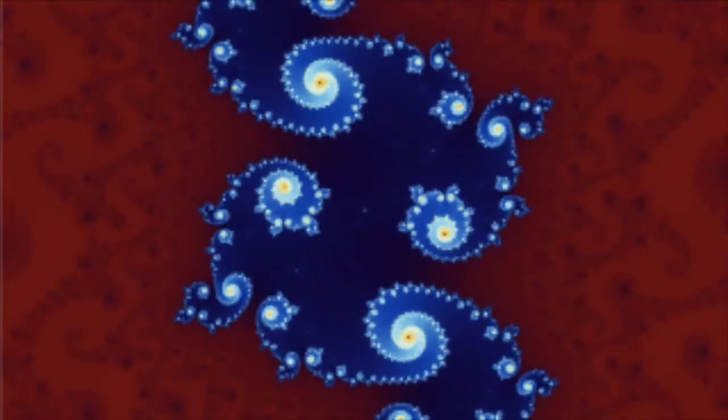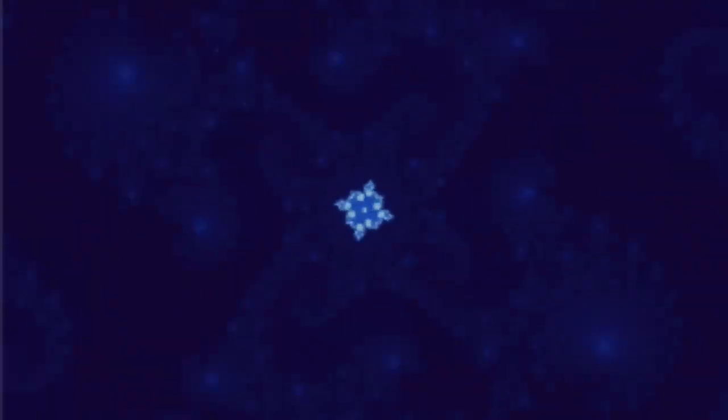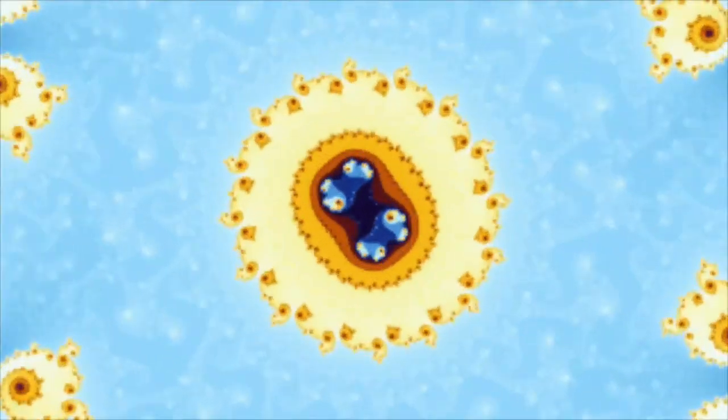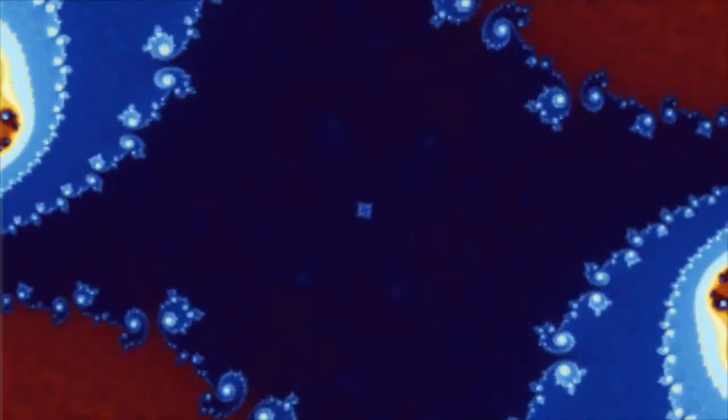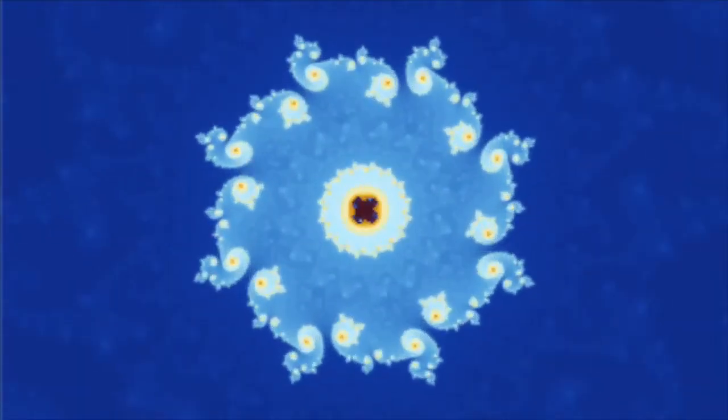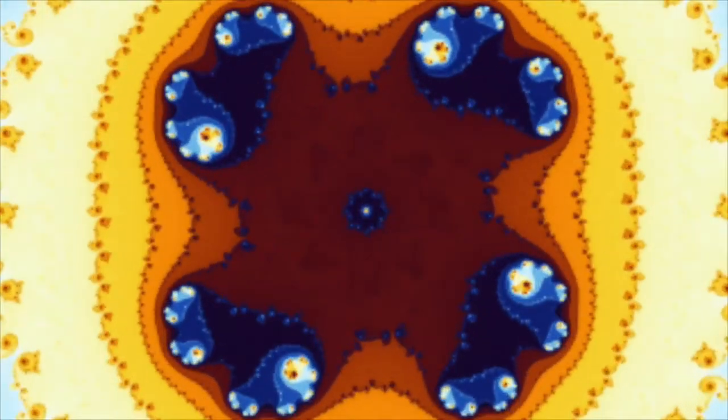When magnified, these specks are found to be replicas of the entire Mandelbrot set, which may seem surprising at first, but actually fits in with our understanding of the nature of fractals. These offshoots are imperfect replicas, however, no two of which are exactly alike, and for a very good reason, that turns out to be one of the most profound facts about the Mandelbrot set.